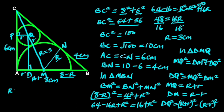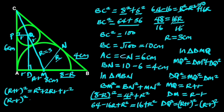Expanding (R plus r)² gives us R² plus 2Rr plus r². And expanding (R minus r)² gives us R² minus 2Rr plus r².